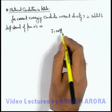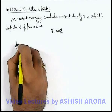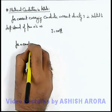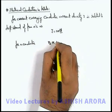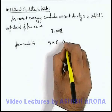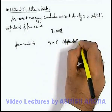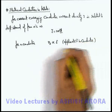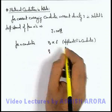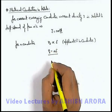We also studied that for a conductor, drift speed is directly proportional to the applied electric field in the conductor. Here we can write that drift speed of free electrons can be written as μE, where μ is a proportionality constant.